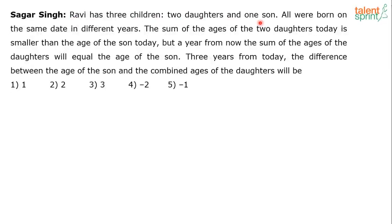Ravi has three children: two daughters and one son. All were born on the same date in different years. The sum of the ages of the two daughters today is smaller than the age of the son today. But a year from now, the sum of the ages of the daughters will equal the age of the son. Three years from today, the difference between the age of the son and the combined ages of the daughters will be — options given are 1, 2, 3, minus 2, or minus 1.